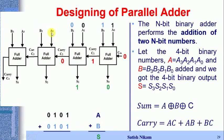For the next full adder, a2 = 1, b2 = 1, and carry-in c2 = 0. Sum = 1 XOR 1 XOR 0, so s2 = 0. For carry: AC = 0, AB = 1, BC = 0. ORing these gives carry-out c3 = 1.